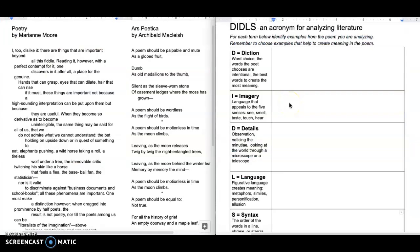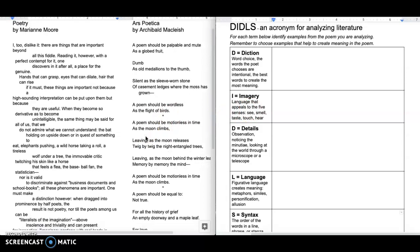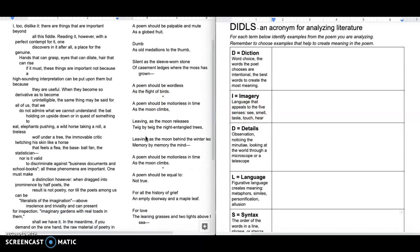We will start by reading Poetry by Marianne Moore out loud. I, too, dislike it. There are things that are important beyond all this fiddle. Reading it, however, with a perfect contempt for it, one discovers in it, after all, a place for the genuine.